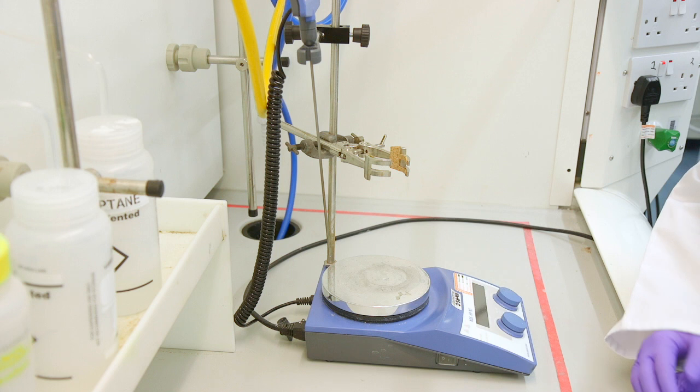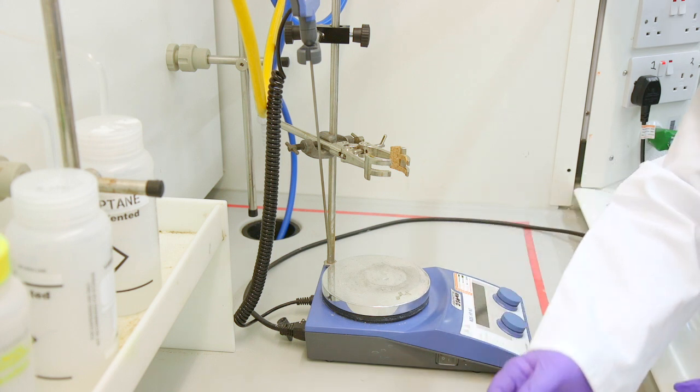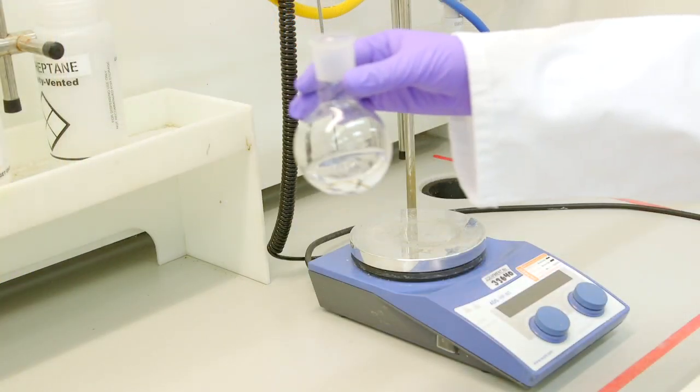We have our stirrer hot plate and we have our flask containing the reaction mixture we want to heat with a magnetic stirrer.